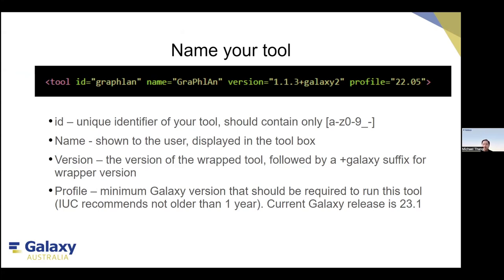The wrapper version increments from 0, 1, and 2, indicating updates to the Galaxy wrapper as the underlying tool improved. The profile is the minimum Galaxy version required to run this tool. Based on IUC recommendations, the profile should not be older than one year. So next year, when 24.1 comes out, we recommend developers use 24.1 as the profile.